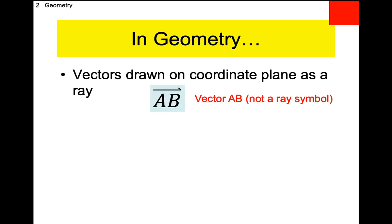Here is your symbol for vector — it looks like a ray but is missing half of the arrowhead. You will read it as 'vector AB.' A is where the vector starts and B is where it terminates — where you place the arrowhead on your coordinate plane. When you draw a vector on a coordinate plane it will have an arrowhead, looking like a ray. But the written symbol for it will look like the symbol for a vector, not a ray.